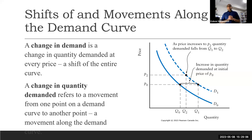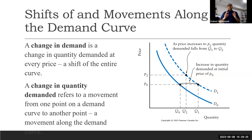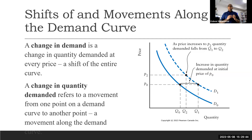A change in quantity demanded is due to only one factor — the own price of the product. If price increases, quantity demanded decreases; if price decreases, quantity demanded increases. This causes a movement along the existing curve, not a shift. So: shift of the curve = change in demand due to all other determinants; movement along the curve = change in quantity demanded due to change in price.